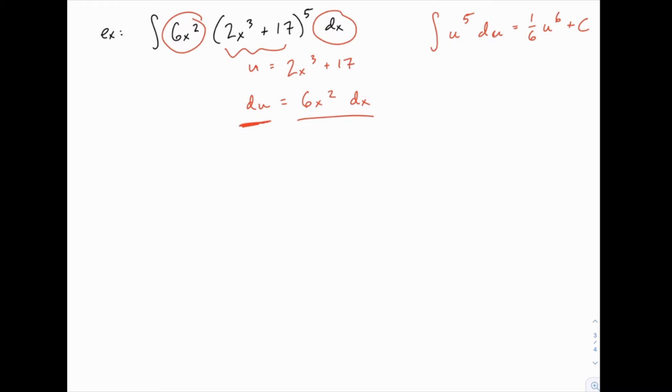Which gives us another hint as to how to start these problems. If you're struggling to start a u substitution problem, if you're having a hard time picking out what u should be, try looking for two pieces to the problem and see if one of them looks like the derivative of the other. So in this case, we have the two pieces, the 2x³ plus 17, which happens to be raised to the fifth power, and we have 6x². And just by looking at those powers, x³ and x², that gives us a hint that the 6x² kind of looks like the derivative of 2x³. In our case, it happens to be exactly the derivative.